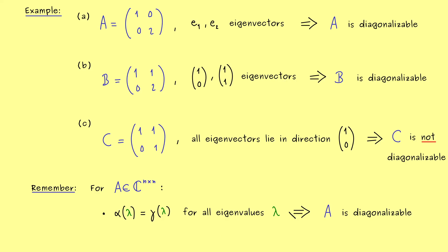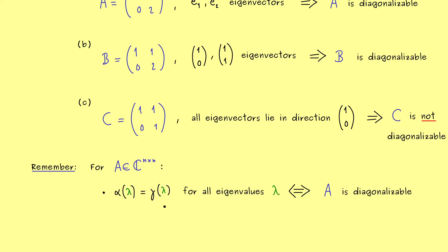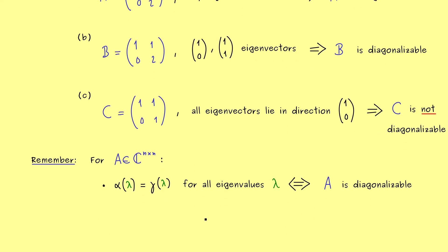Indeed, it means if we add up all the geometric multiplicities and we get out n, then we find a basis consisting of eigenvectors. However, this property is equivalent to saying that the geometric multiplicity is equal to the algebraic multiplicity. Simply because the algebraic multiplicities always add up to n. Therefore, if we have this equality for all eigenvalues λ, we find a diagonalizable matrix A.